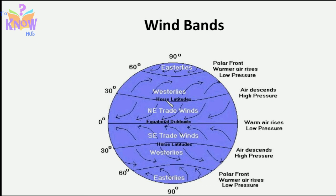Let's summarize what happens to solar radiation. If Q is the energy that reaches the surface — that is about 50% of the solar energy — we can divide it into three parts: one, the sensible heat; two, the latent heat; and three, the surface heat flux into soil and water.